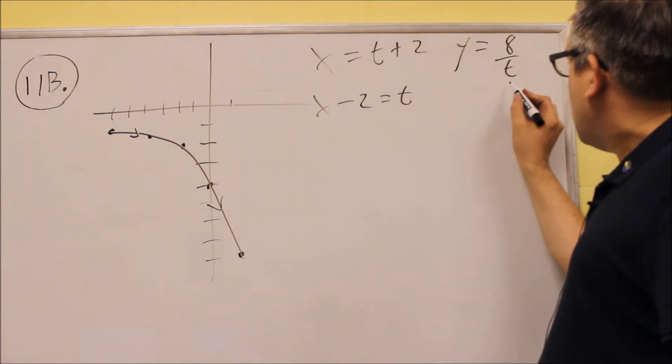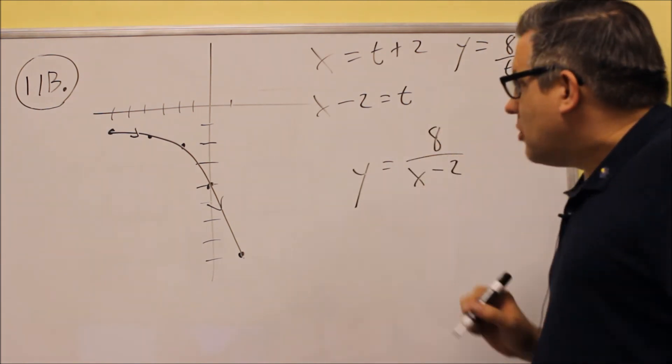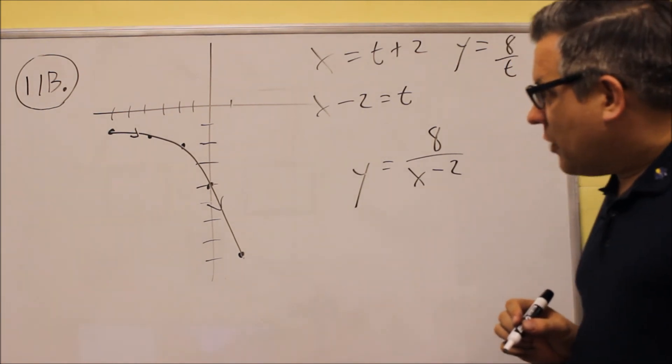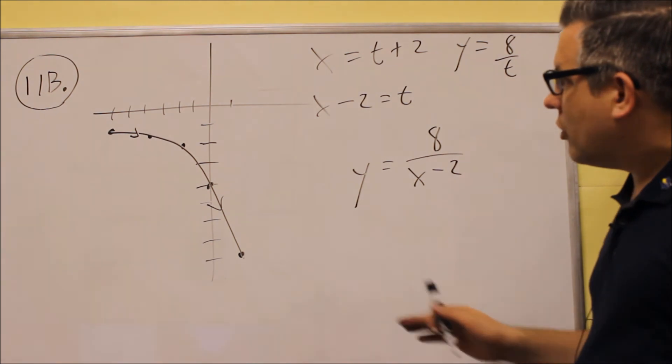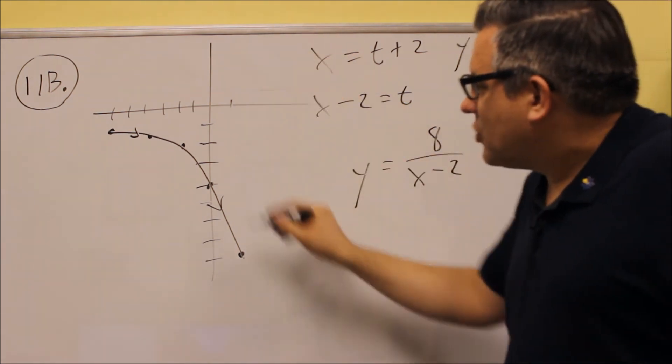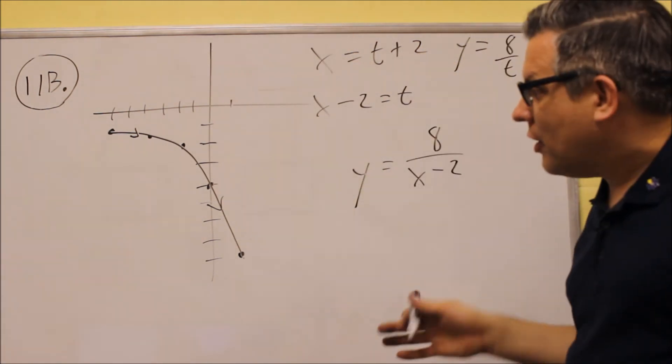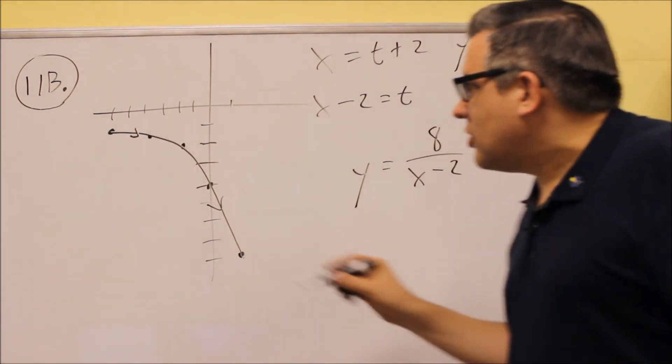We're going to put that into here, which means our answer is going to be this. So we get 8 over x minus 2, so we're basically just seeing part of that rational function that we have here, there would normally be an asymptote at 2 there. So you'd have one piece down here, another piece up there if you saw the whole graph, but because we're only looking at specific values for t, that's why you only see this small portion.